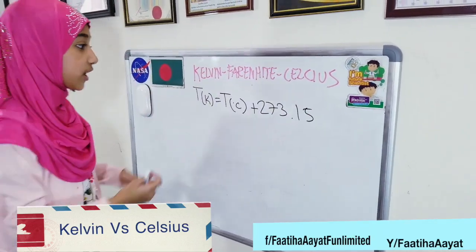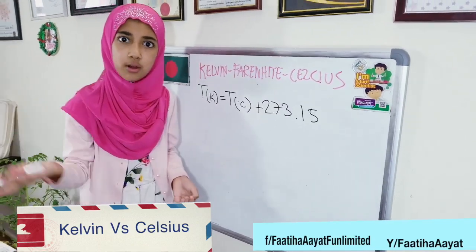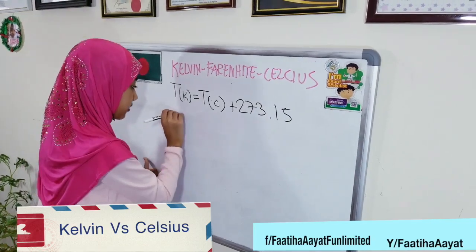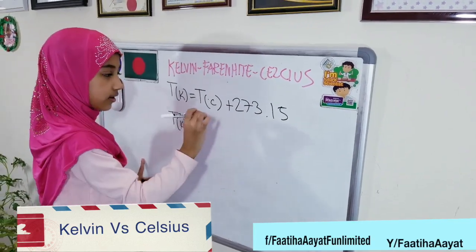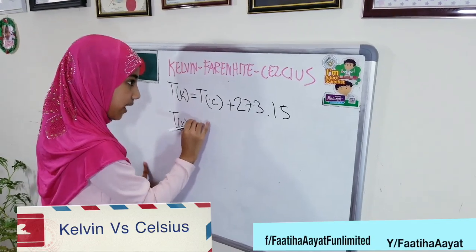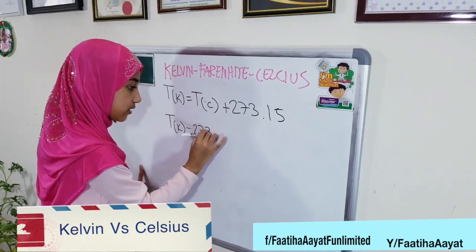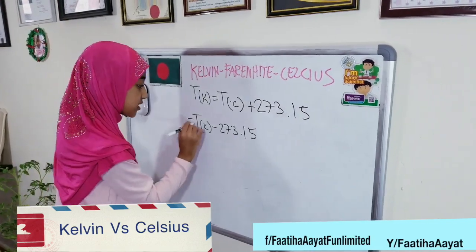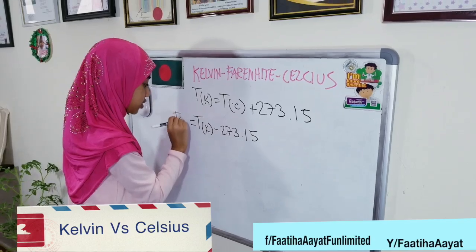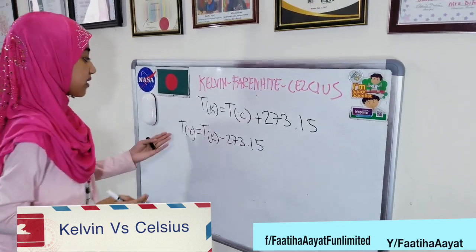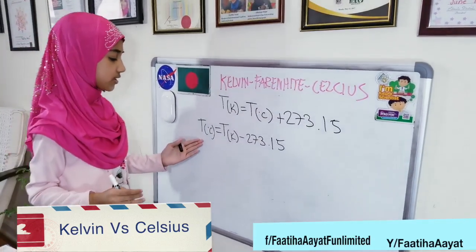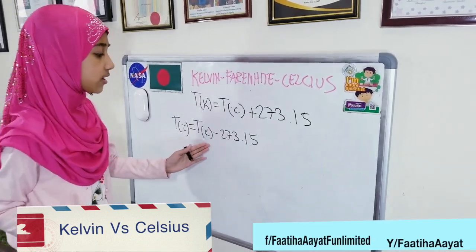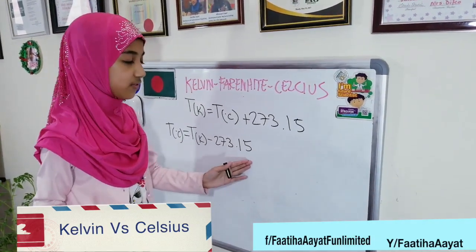Now I'm going to figure out this equation and show you the formula of how to convert the Kelvin to the Celsius. Temperature measured in degrees Celsius is equal to temperature measured in Kelvin, minus 273.15.